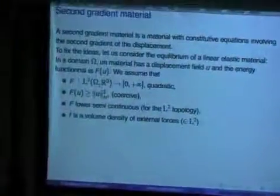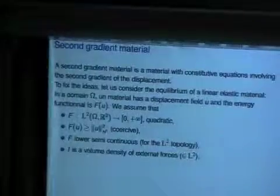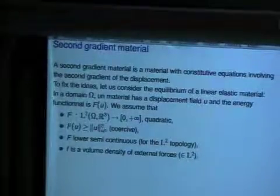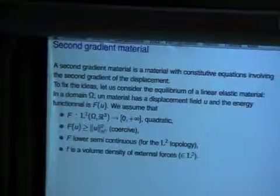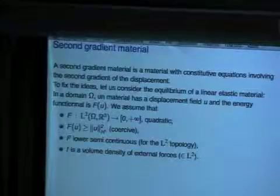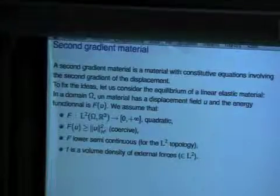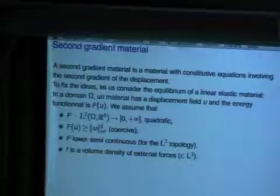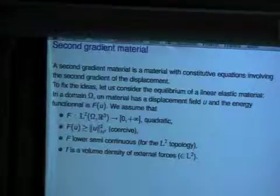If these things depend on the second gradient of the displacement, then you deal with a second gradient material. To fix the idea, I describe here a second gradient elastic material and find its equilibrium. You consider a regular bounded domain omega. You have a material with a displacement field u, and an energy, and the equilibrium minimizes the energy. The standard mathematical assumption for the energy is quadratic here, because I want to deal with a linear elastic material.